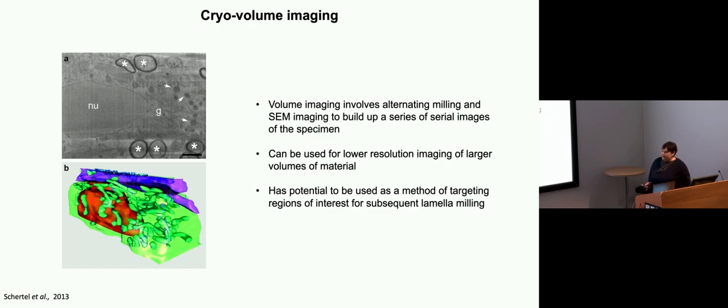Which can then be used to segment it and model the larger volume. This is quite useful for getting a view of larger material. But also, I think this has quite interesting potential as a method to actually target sites for lamellae milling, particularly when you go beyond cells on grid and to tissues and thicker samples. The idea is that you'd use this block face milling until you start to see features that indicate you're in the region that you're interested in and then switch to lamellae milling.